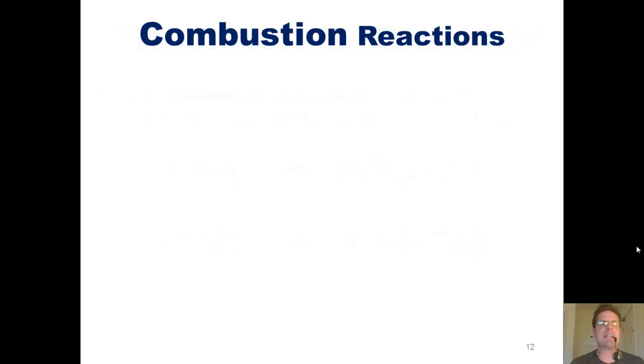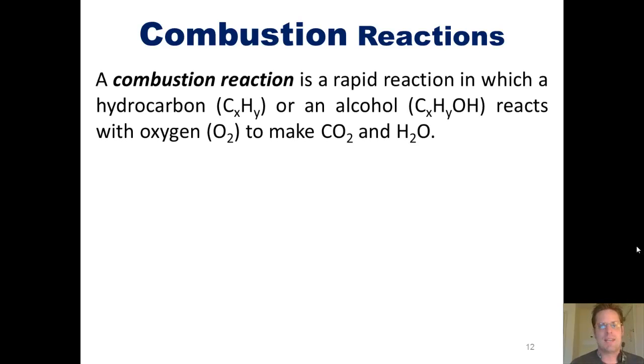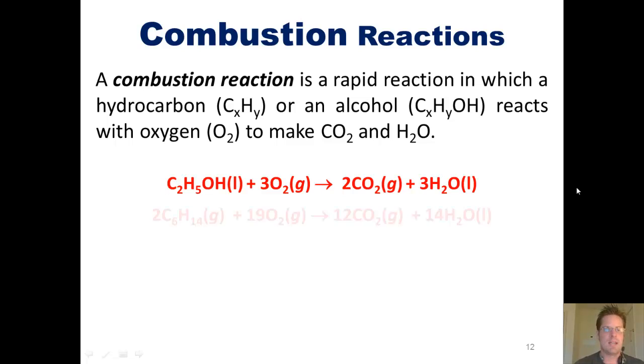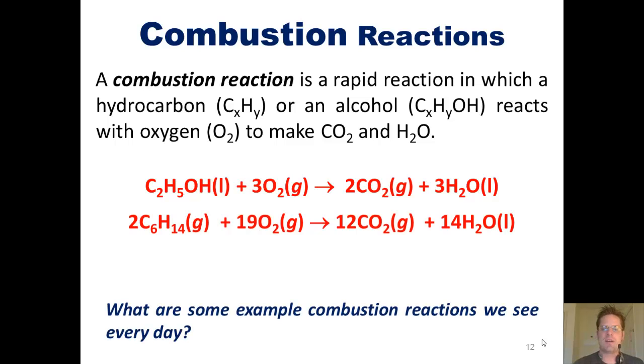The third type of reaction I'll teach you is combustion reactions. A combustion reaction is a very rapid chemical reaction in which a hydrocarbon, which has this generic formula, or an alcohol, which has this type of formula, reacts with oxygen to make CO2 and H2O. Here is an example. This molecule right here, which is an alcohol, called ethanol, can combine with oxygen in a combustion reaction to form CO2 and H2O. Once again, you can note that the coefficients between each of the reactants and products are 1, 3, 2, and 3, respectively. You'll note that we do not write the number 1 when it's a coefficient. It's just implied. Here's another example. This molecule right here can combine in a 2 to 19 ratio with oxygen gas in a combustion reaction to form CO2 and H2O.